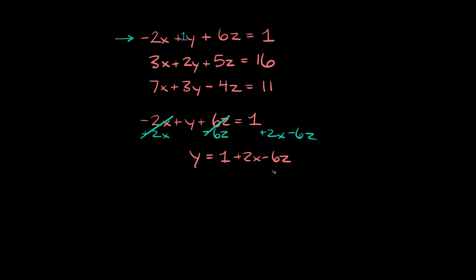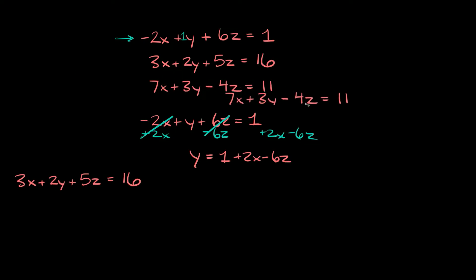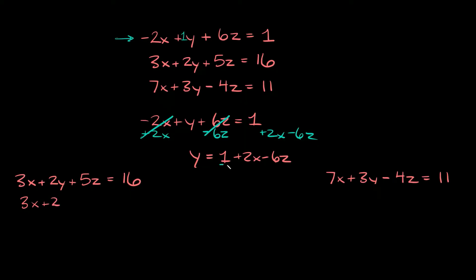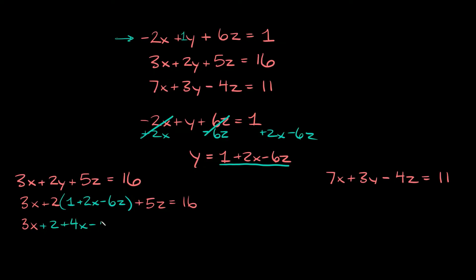The second step is taking what we just solved for y and plugging it into the other two equations. So plugging it into the first of those two, we get 3x plus 2 times y — but y is now 1 plus 2x minus 6z — so that gives us 3x plus 2 times (1 plus 2x minus 6z) plus 5z is equal to 16. Distributing the 2, we get 3x plus 2 plus 4x minus 12z plus 5z equals 16.